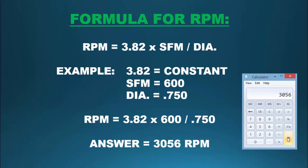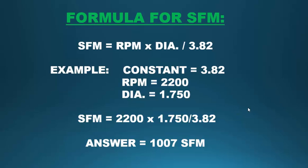Then there's one more formula for surface feed per minute. To calculate the surface feed per minute, we take the RPM, multiply it times the diameter that we're turning, and divide it by the 3.82 constant. For our example, we have the constant of 3.82, the RPM of 2200, and we're turning a diameter of 1.750.